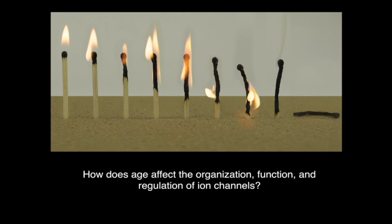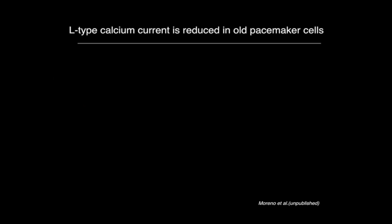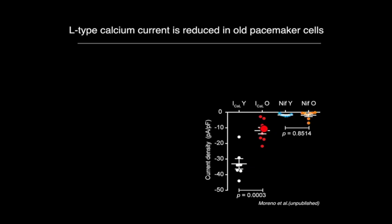The most striking fact we have found so far is a big reduction in the L-type calcium current in old animals. These downward deflections show how much calcium is getting into the cell when you activate the cells with voltage. In young animals, we have a large entrance of calcium, while old animals show a strong reduction in L-type calcium channel current. The quantification confirms a big reduction in this component in old animals, and L-type calcium channels are the main source of calcium entry here.